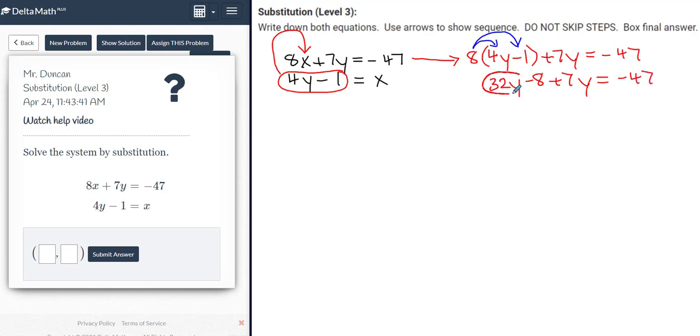I will circle, or you could underline, or box, or put a triangle. These two terms, because they're variable terms, I'm going to take a moment to combine those together. 32y and 7y is going to result in 39y. Let's bring down the negative 8, and it should be equal to a negative 47.